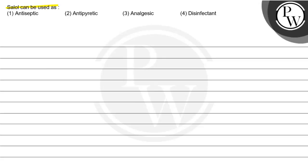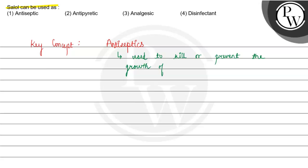We have to tell in which way Salol is used. The key concept here is antiseptic. Antiseptics are substances used to kill or prevent the growth of microorganisms. These substances are used on living tissues.